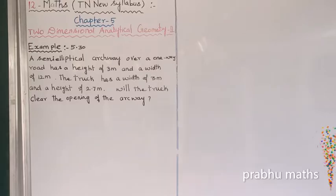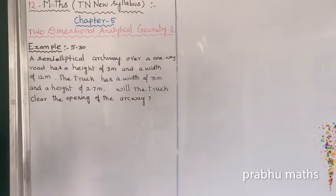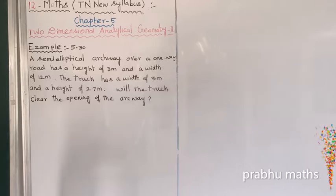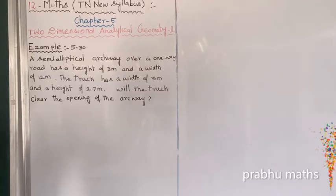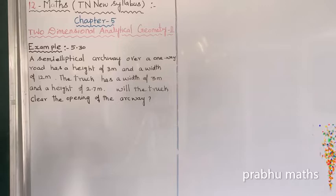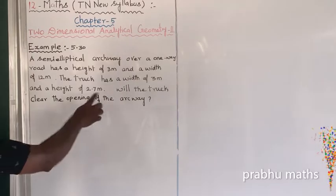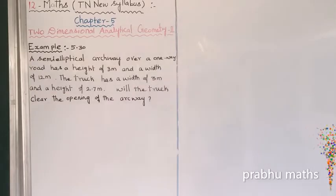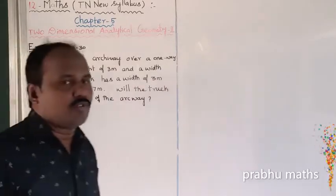Example 5.30 word problem: A semi-elliptical archway over a one-way road has a height of 3 meters and a width of 12 meters. The truck has a width of 3 meters and a height of 2.7 meters. Will the truck clearly pass through the opening of the archway?